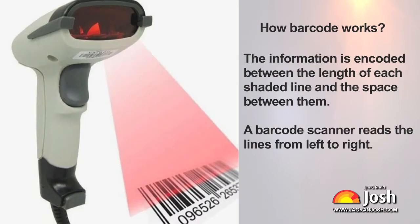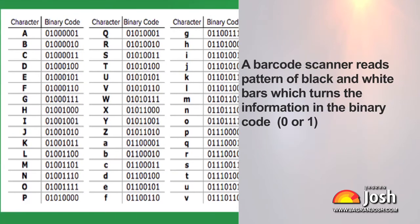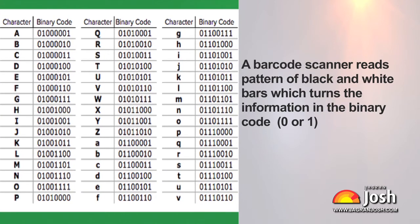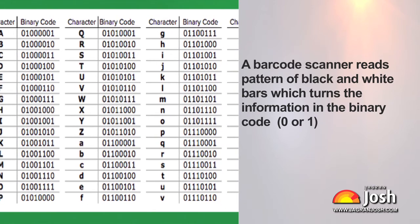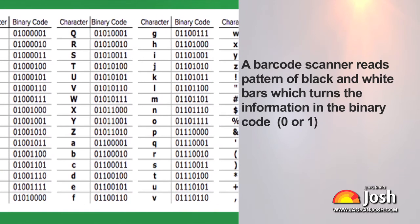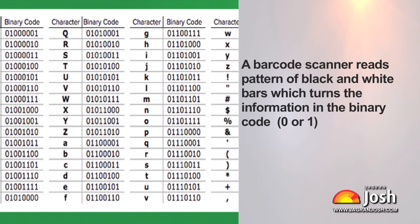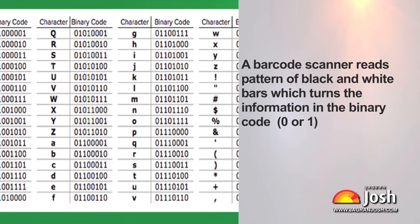How does a barcode work? A barcode is a square or rectangular image consisting of a series of parallel black lines and white spaces. The information is encoded between the length of each shaded line and the space between them. A barcode scanner reads the lines from left to right, converting the pattern of black and white bars into binary code — 0 or 1. The computer reads the information in binary form and displays it on the monitor screen.